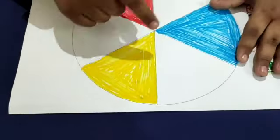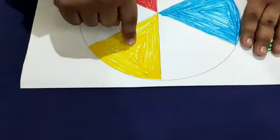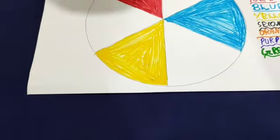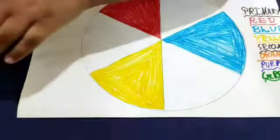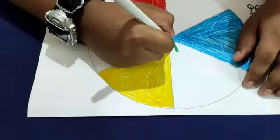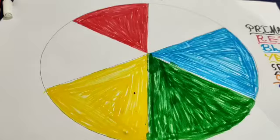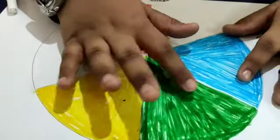So the first color is, if you mix blue and yellow, green color will come. So here in the middle you have to color green. Okay, now I have colored green.